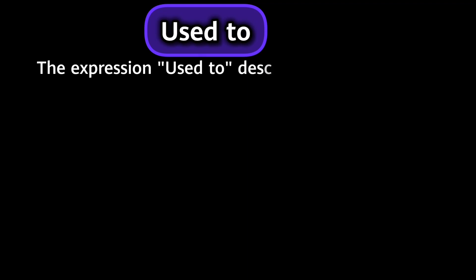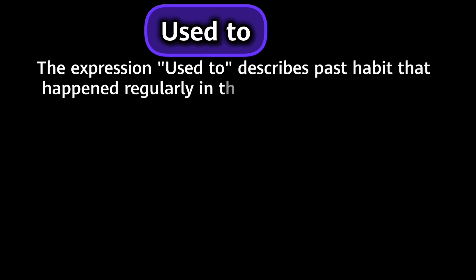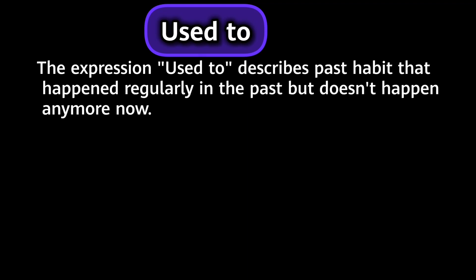Let's first learn 'used to'. The expression 'used to' describes a past habit that happened regularly in the past but doesn't happen anymore now. Simply, it means that this phrase is used when we want to talk about a habit that was our habit but it is not now. Basically, all of us must have had some habit in the past but now we have removed that habit and it is not part of our life. So when you talk about it, you should use this expression.